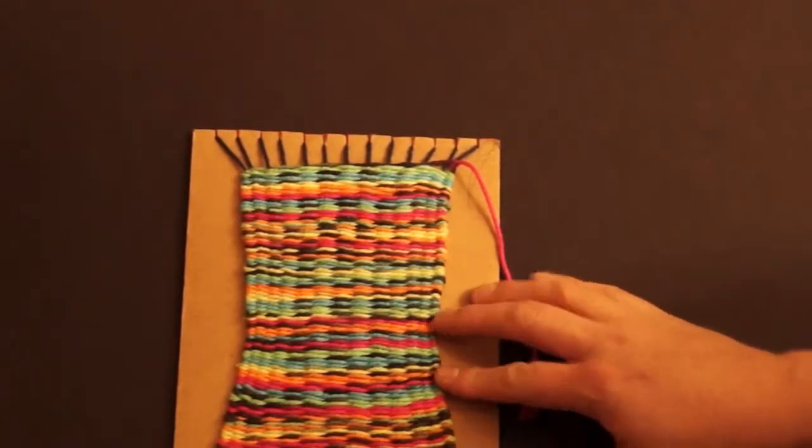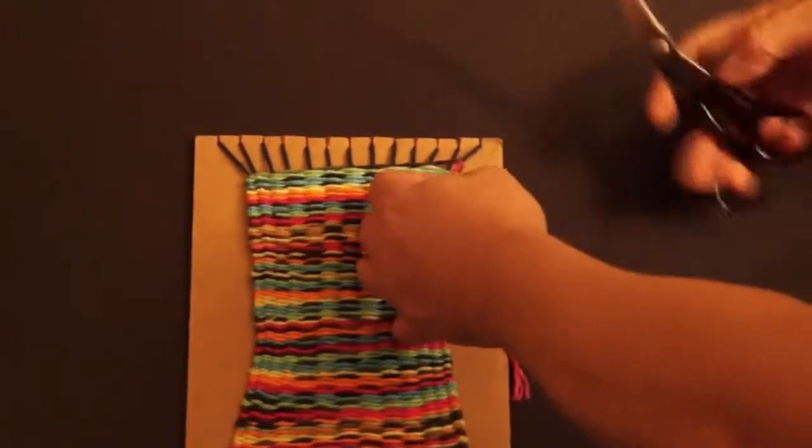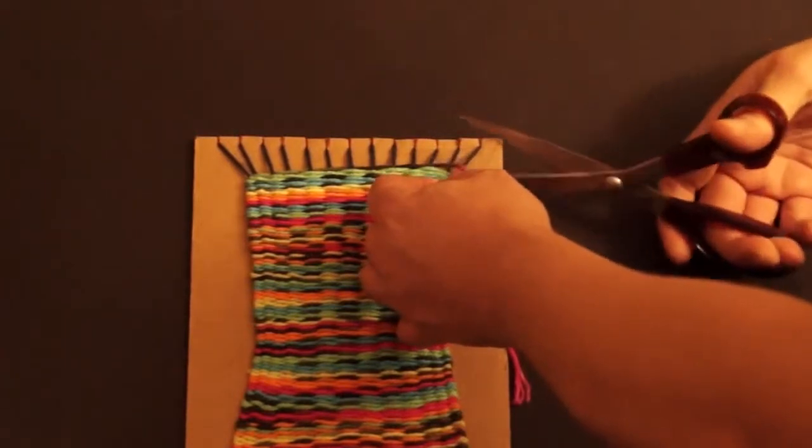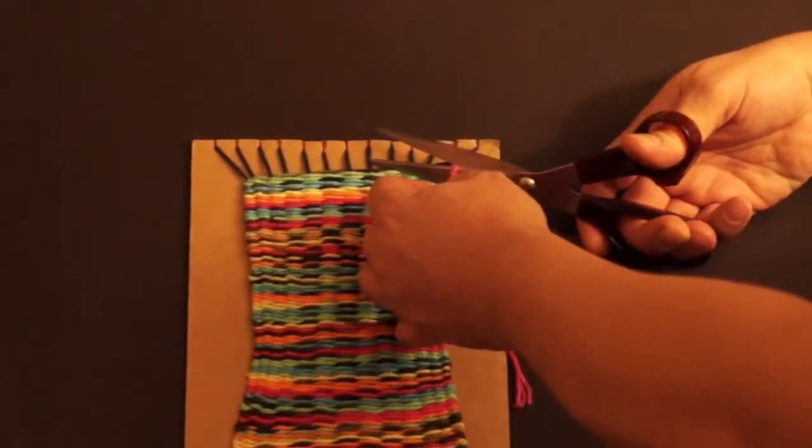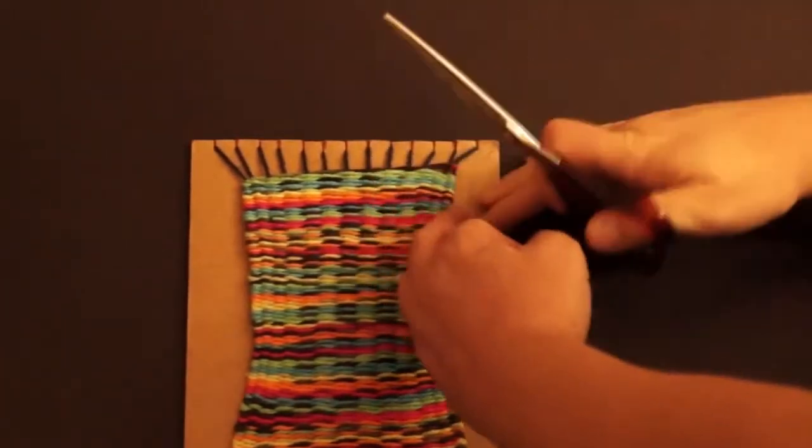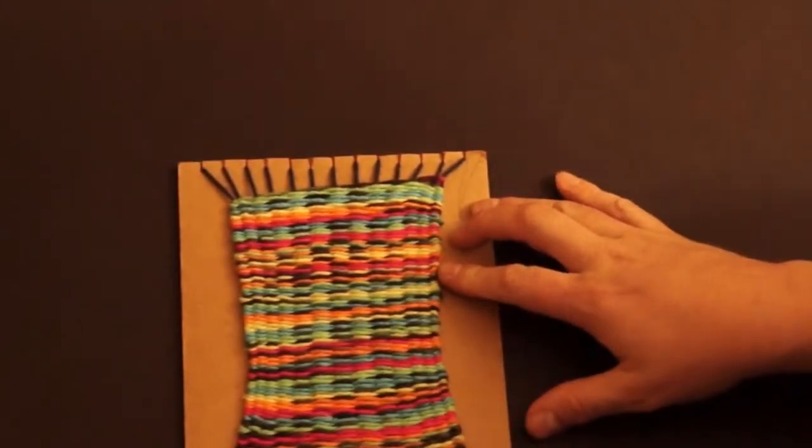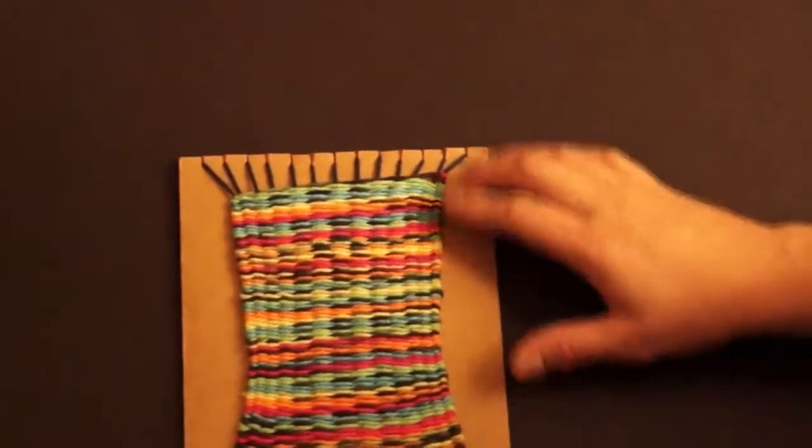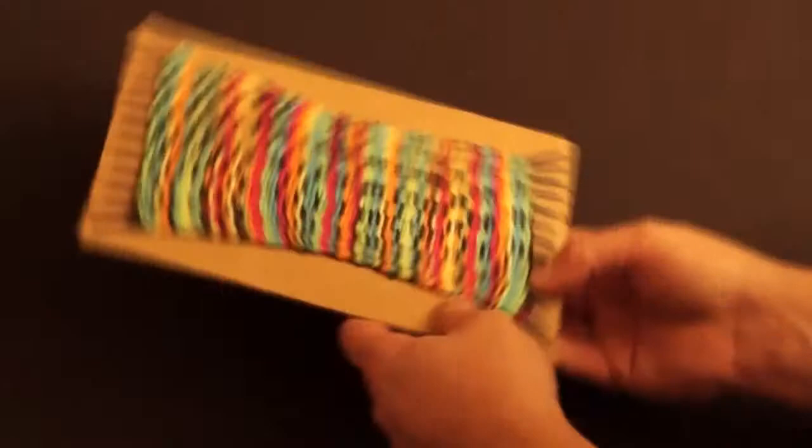There's two ways that we can finish this. Of course, I want to trim off this edge, but not too close because I don't want it to unravel. So the weaving is done, and it's time to take it off the loom.